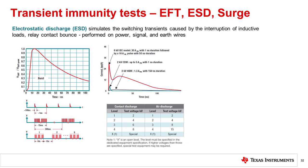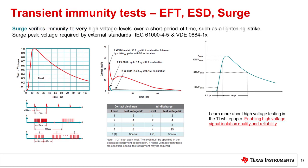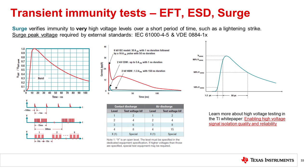ESD, or electrostatic discharge, is the transfer of charge between two objects that are at different potential, and it's caused by contact or an induced electric field. Surge testing is used to verify device immunity to very high voltage impulses over a short period of time, and is required for isolators. Surge events can result from power faults, switching from reactive loads, or indirect lightning strikes. For isolators, the surge waveform is defined by IEC 61000-4-5, and the amplitude of the test voltage is determined by the isolation rating of the device. Note that passing a surge test at levels greater than 10 kV has been widely used as the gold standard for achieving reinforced isolation, though system level standards allow for lower values of surge capability for systems with lower line voltages.